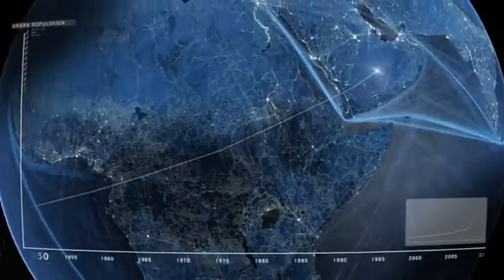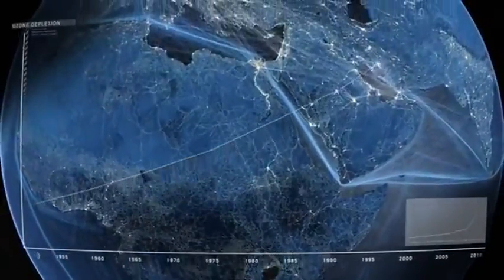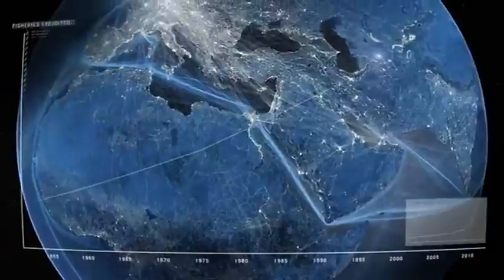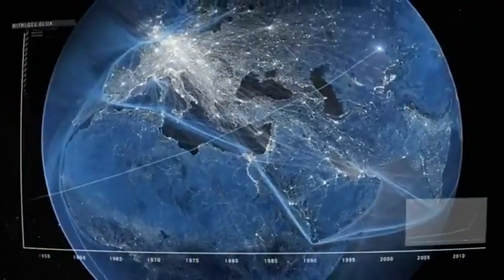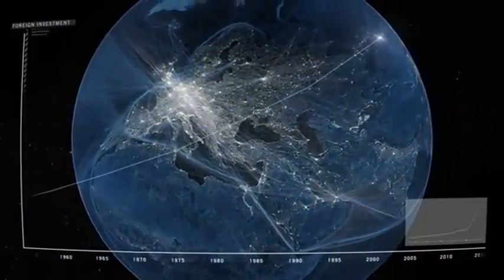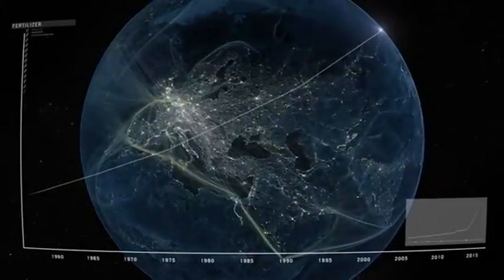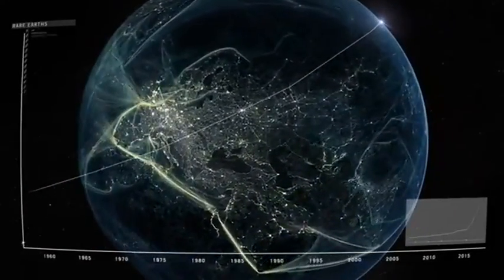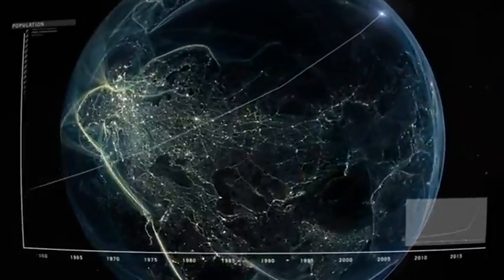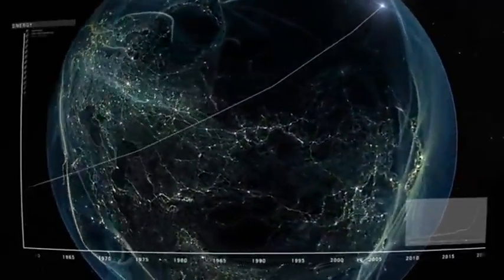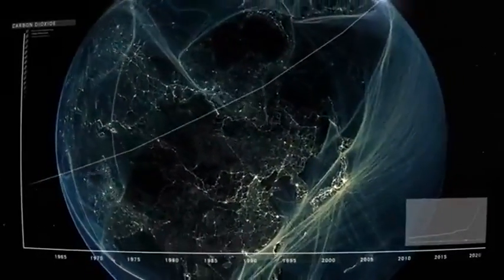Temperatures are increasing. We have made a hole in the ozone layer. We are losing biodiversity. Many of the world's deltas are sinking due to damming, mining and other causes. Sea level is rising. Ocean acidification is a real threat. We are altering Earth's natural cycles.